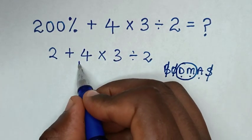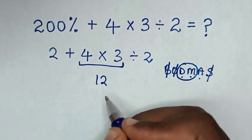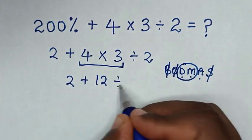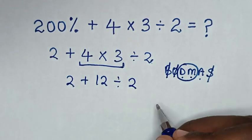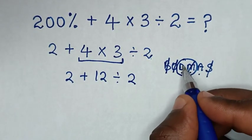We will deal first with this multiplication of 4 times 3, which is 12. So it will be 2, then plus 12 divided by 2. After we finish with multiplication, we will deal with this division.